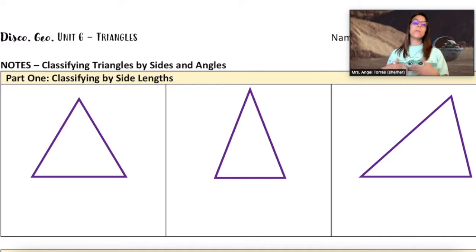So part one, we're just going to review how we classify triangles by side lengths. There's three different classifications. The first one is when all three sides of a triangle are equal to each other or congruent, we call those equilateral triangles. Equi meaning equal and lateral meaning sides.